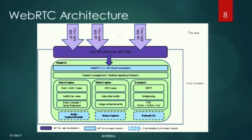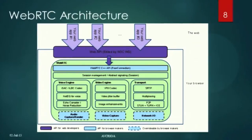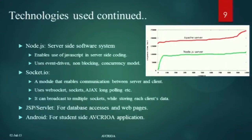Coming to the WebRTC architecture: initially all web applications go through the Web API and can access the WebRTC API directly in the browser. Then there is session management or abstract signaling — the actual signaling process between the two peers. Once signaling is done, the two peers can directly communicate using three main features: Network I/O, which handles all means of transfer between peers; Audio Capture/Render; and Video Capture for streaming purposes.